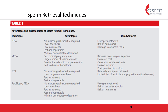Sperm can be retrieved either from the epididymis or from the testis. Pregnancy rates with IVF and ICSI are similar regardless of the source of sperm. All of these techniques have relative advantages and disadvantages, and it is up to the surgeon and patient to decide which technique is most appropriate for achieving the desired reproductive outcomes.